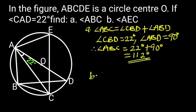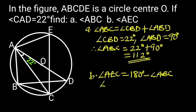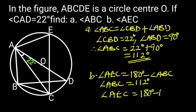Solution B: Angle AEC equals 180 degrees minus angle ABC. Reason: Opposite angles of cyclic quadrilateral. Since angle ABC equals 112 degrees, hence angle AEC equals 180 degrees minus 112 degrees, which is 68 degrees.